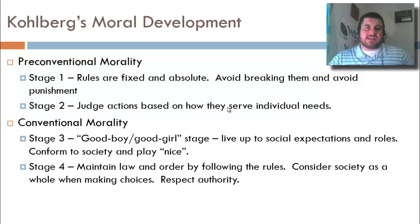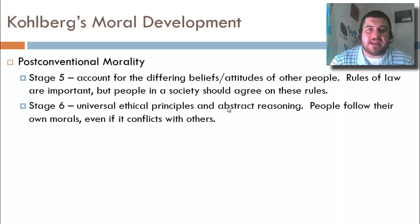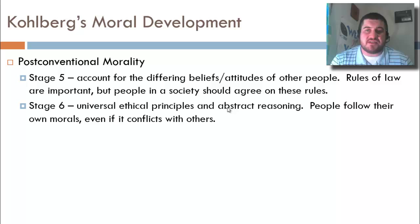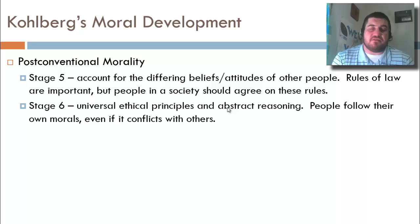The final level is post-conventional morality, covering stages five and six. In Stage 5, we recognize that others may have differing beliefs, and while the rules of law are important, a majority of people should agree on those rules. Stage 6 is universal ethical principles — here we follow our own internalized morals, doing what we know is right even if it conflicts with others.